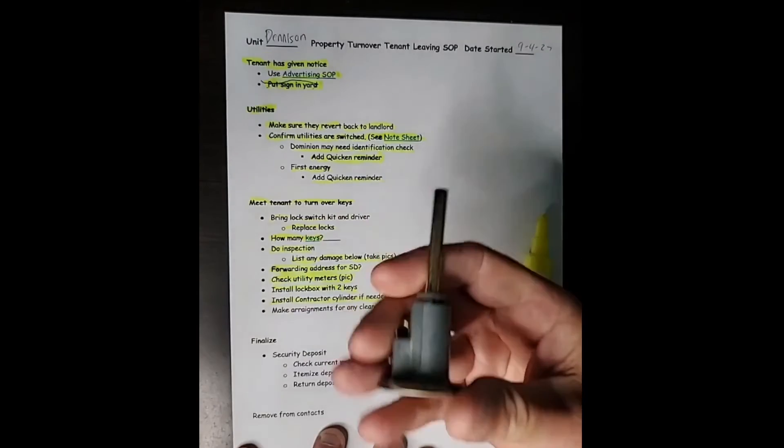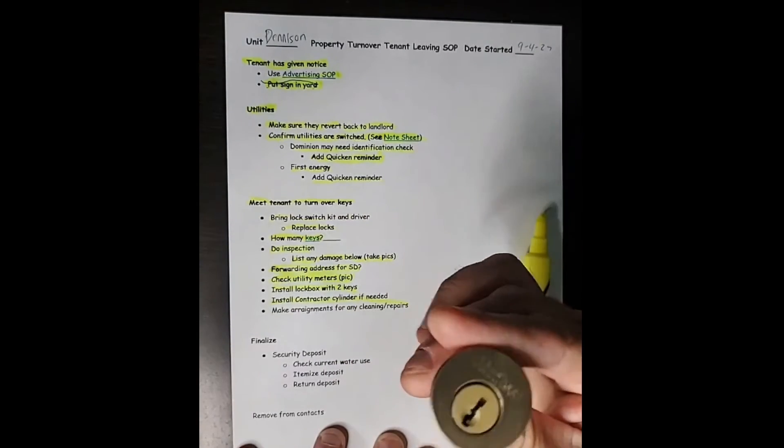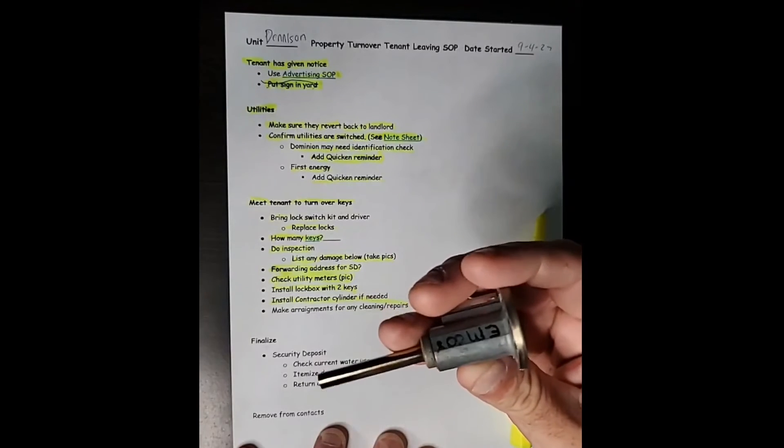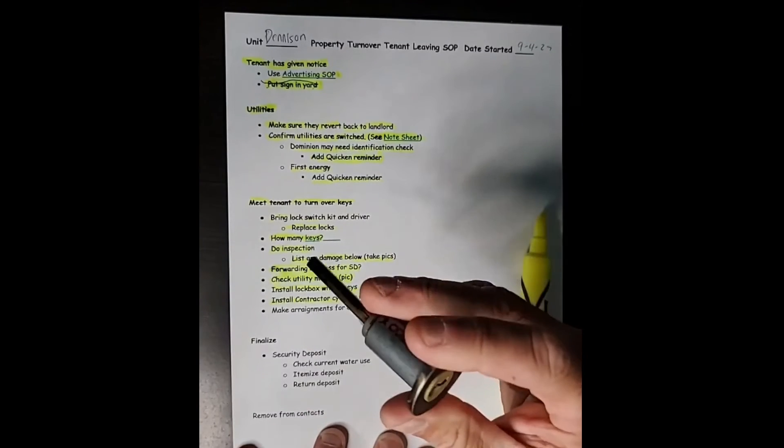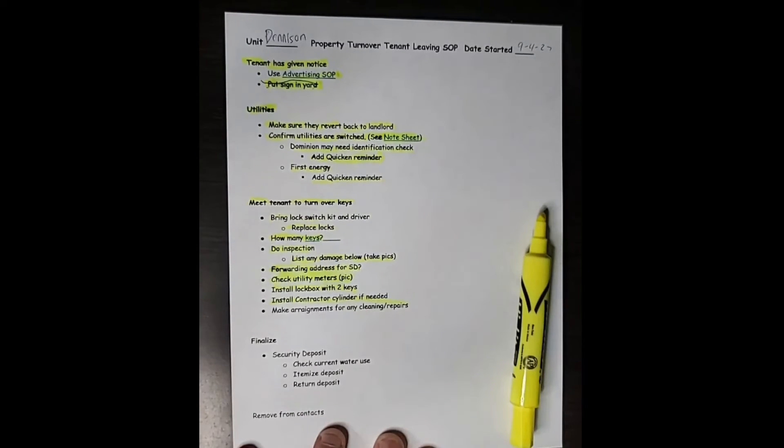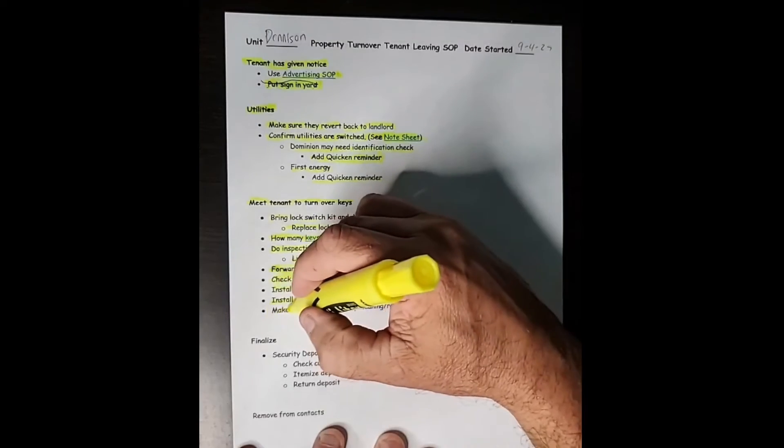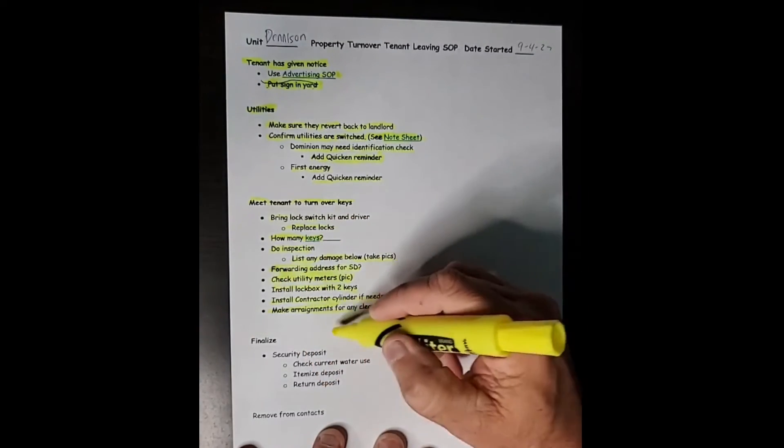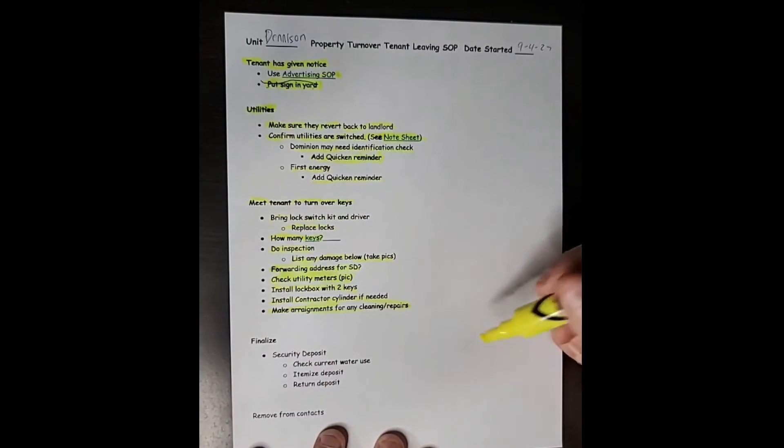So I might install a contractor lock. There's these cylinders here. There's a special one that I give a certain key to my contractor. There's a couple different ones. And I just install this cylinder in there when they have work to do and they keep that key. Again, I make arrangements for anything that needs to be done. And I'll even note that here on these sheets sometimes.